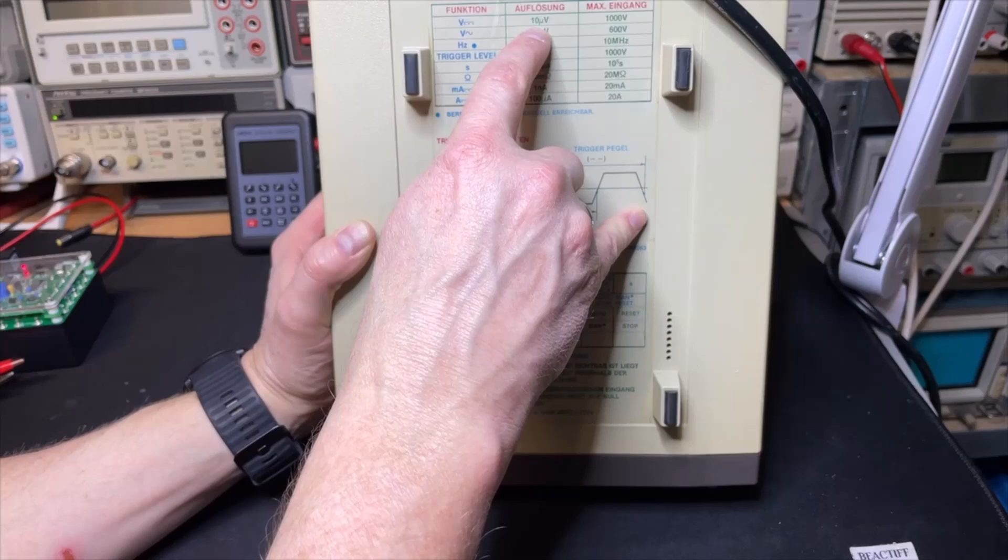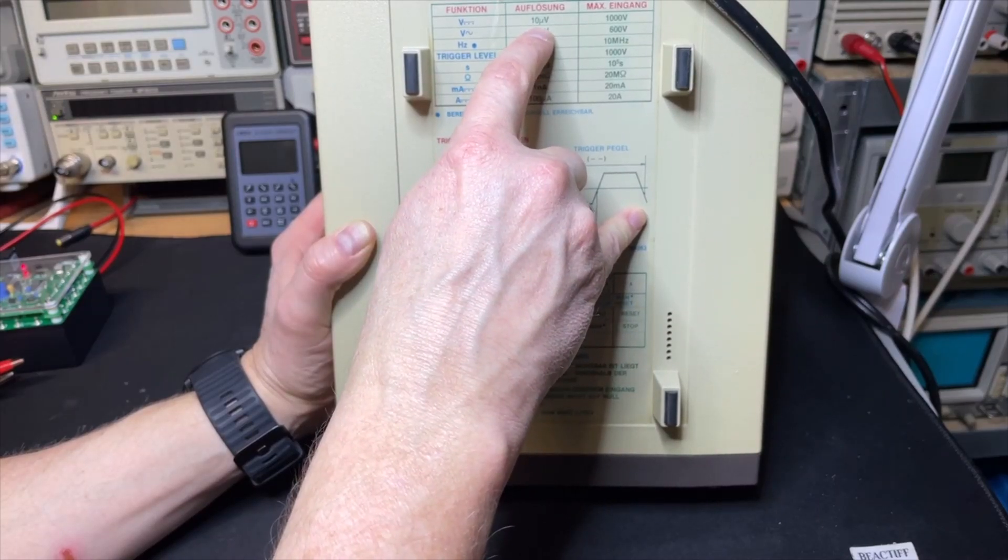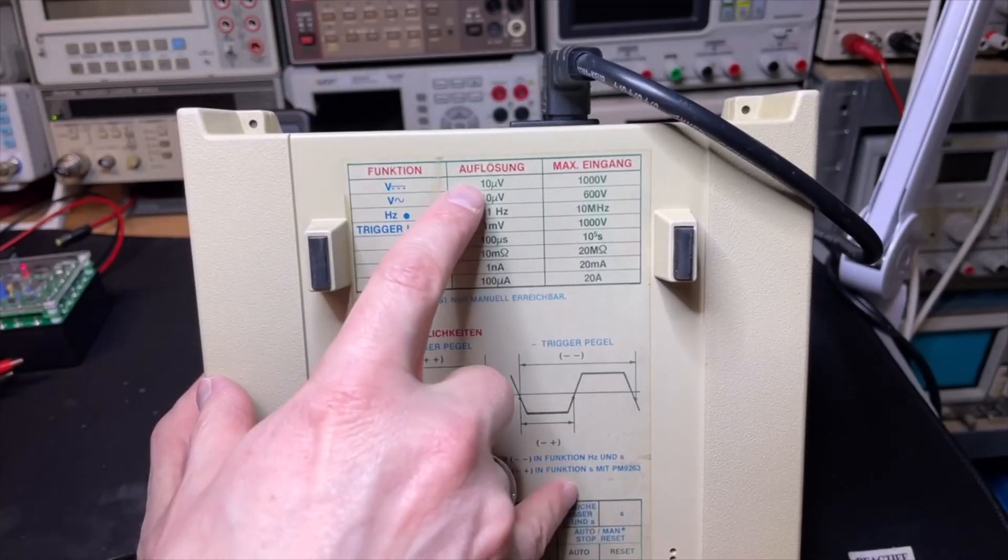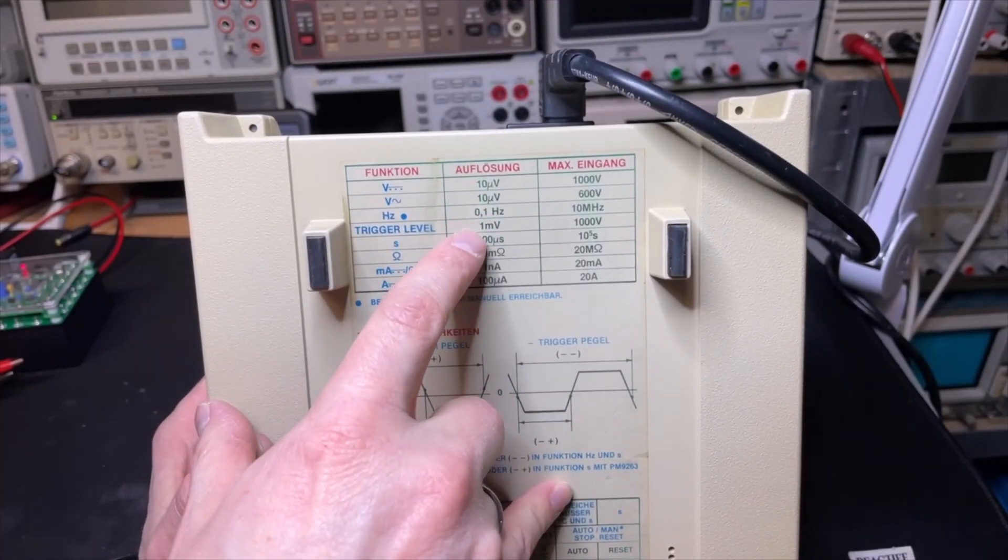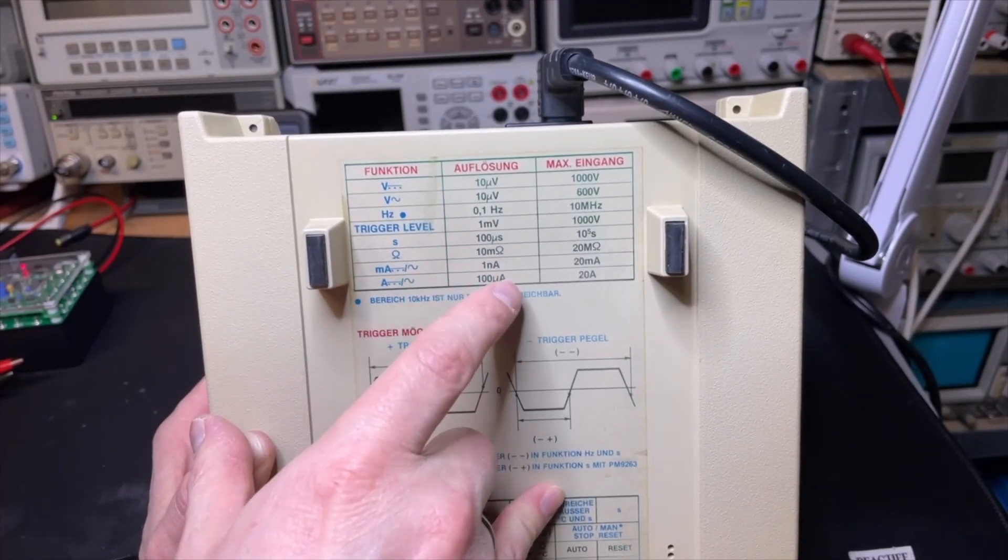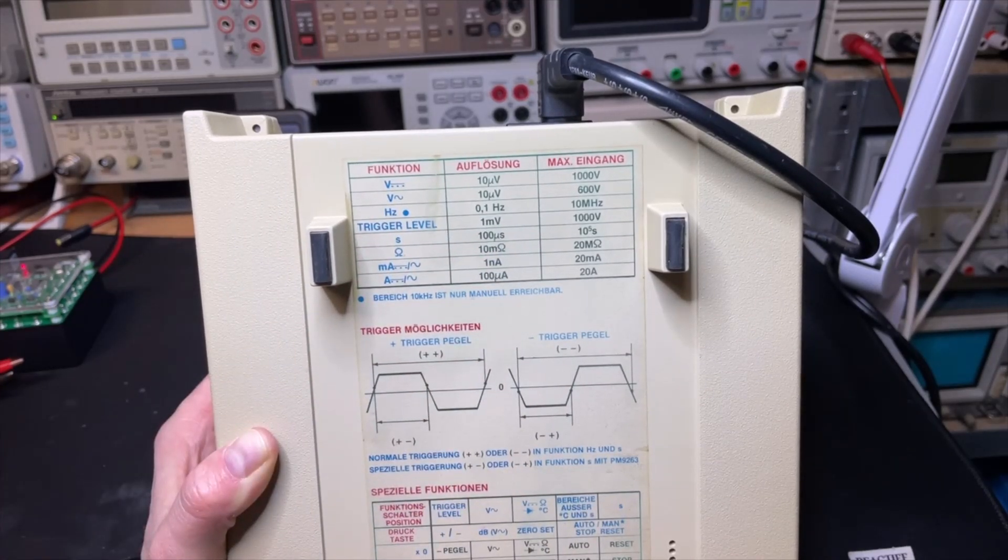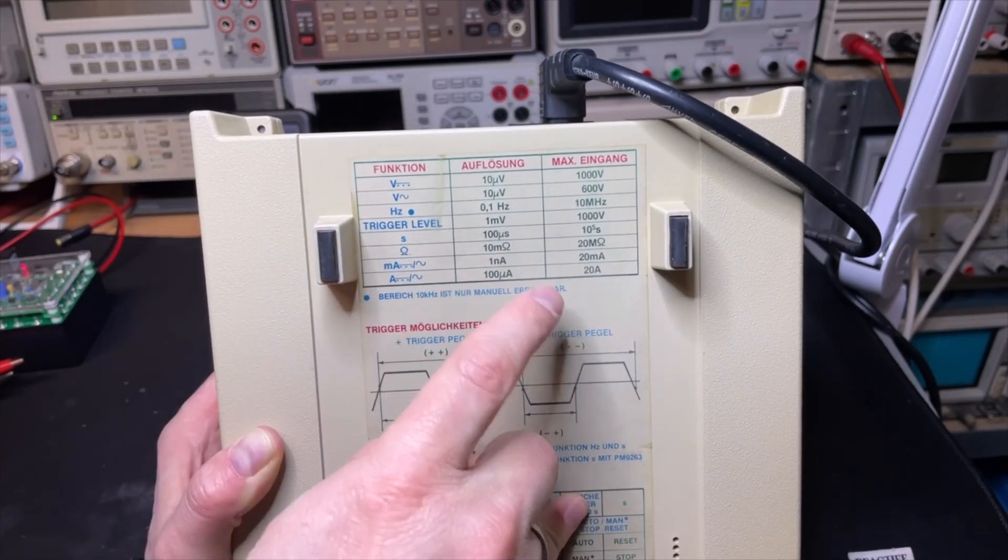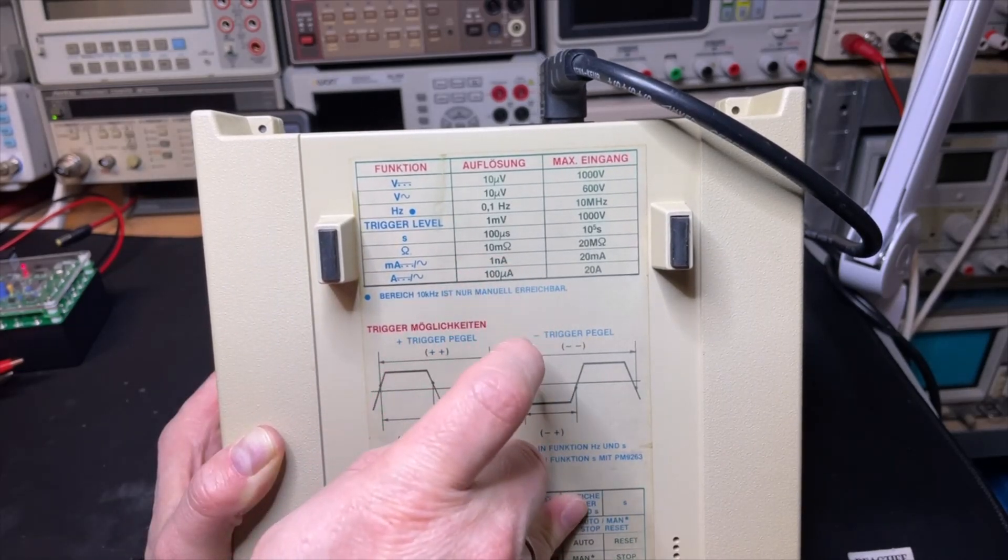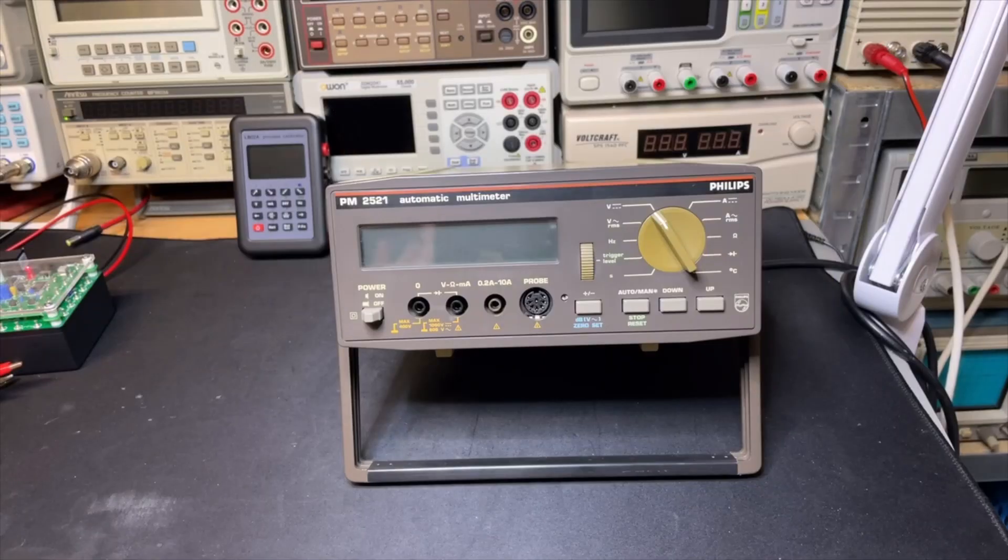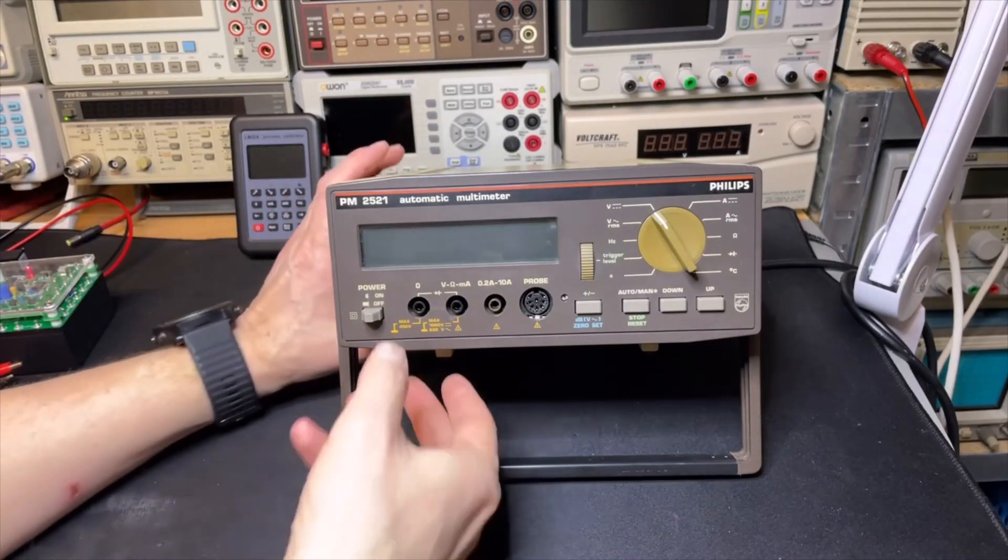It can even measure microvolts, that is cool. Millivolts here in the trigger. Milliohms even, nano amps. Oh this meter is precise. Well I know it's still working, let's have a look how good.